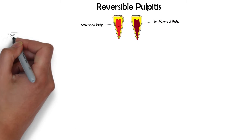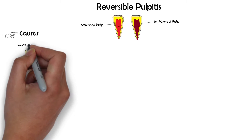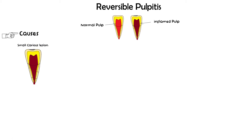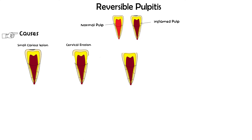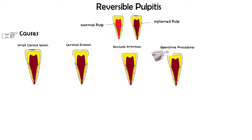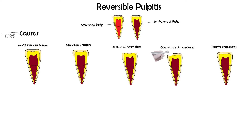Causes of reversible pulpitis can vary. The most common cause is a small caries lesion. It can also be caused by cervical erosions or occlusal attrition. Reversible pulpitis can also be elicited by operative procedures such as deep curettage or simple cavity preparations. Finally, the pulp can also get inflamed due to tooth fractures confined to the enamel that don't propagate to dentine.